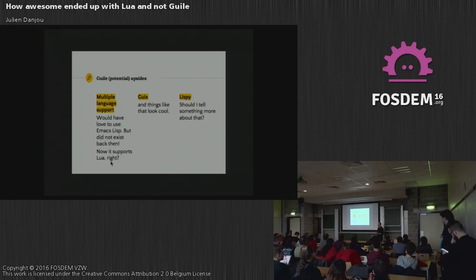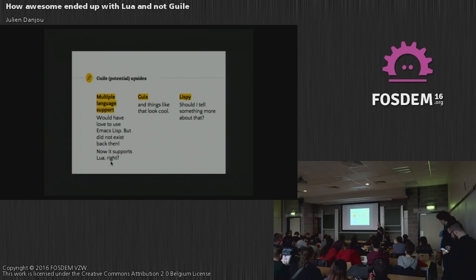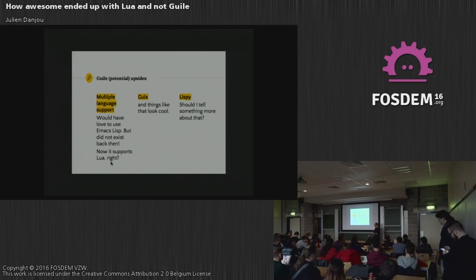We didn't use Guile, but I still see a few upsides to Guile we would have been able to use — like multiple language support that came with version 2. I would have loved to use Emacs Lisp because I've done a lot of it over the past years. Since then I switched my mind — I do prefer and like Lisp a lot. I've been doing a lot of Emacs Lisp and I think Emacs is kind of the model I realized I should have probably followed, but I was doing Lua earlier.